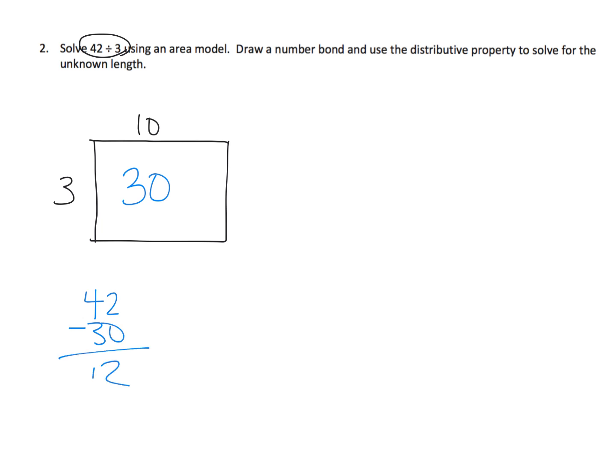Which means this piece right here is 12 units, which means the width here is 4. So a height of 3, a width of 4 means we're using 12 square units. And we've used up all 42 square units. And so our answer is 14. So writing that down, 42 divided by 3 gives us 14.